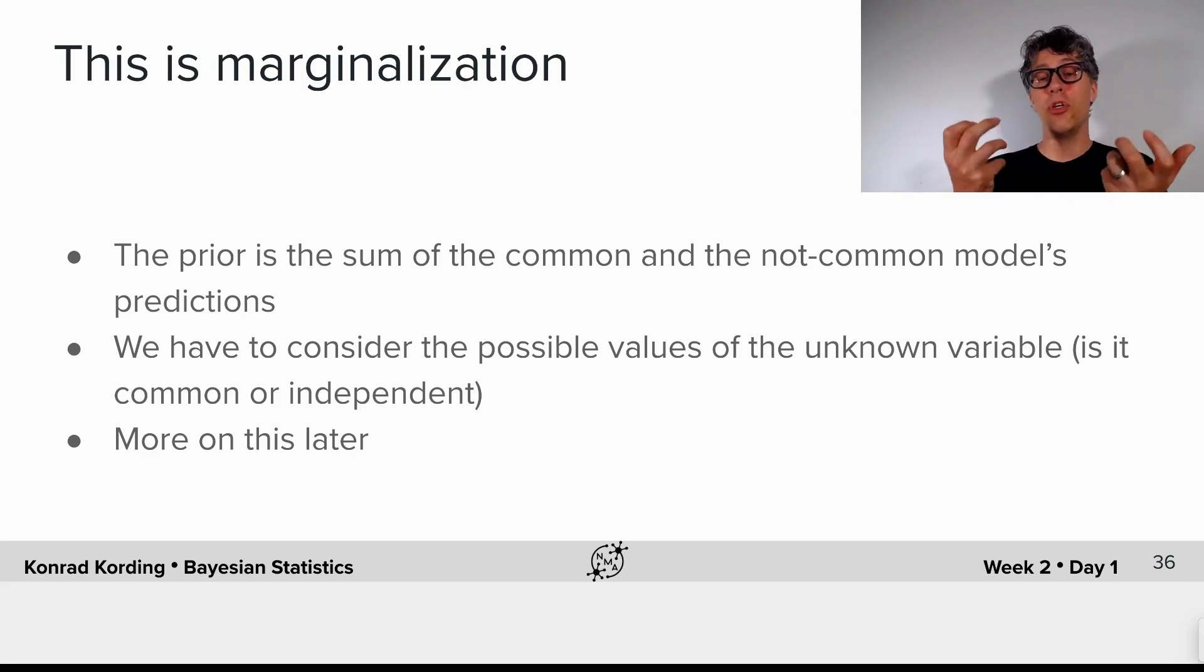And by adding them together, we are effectively considering both possible values of an unknown variable. The unknown variable - is it dependent or is it independent? Is it common cause or is it independent causes?